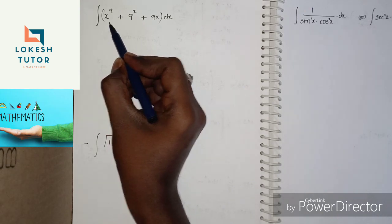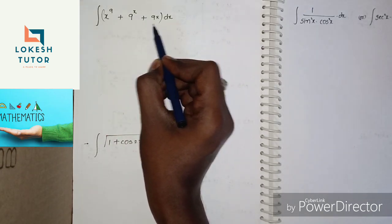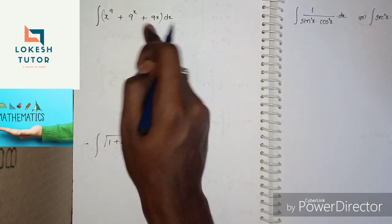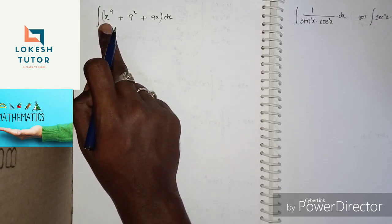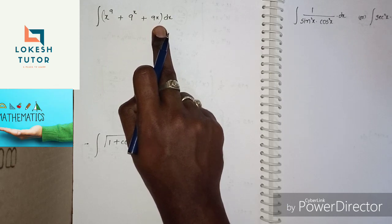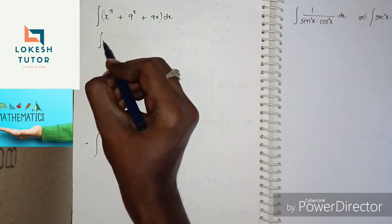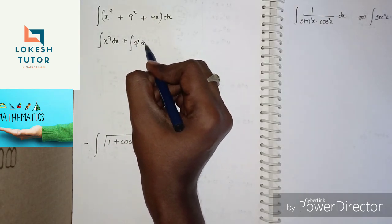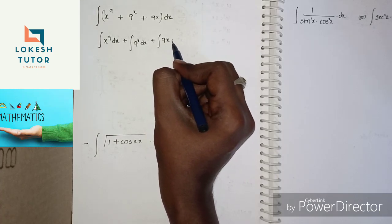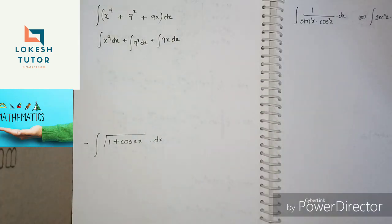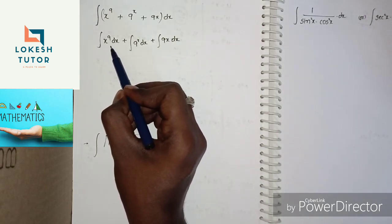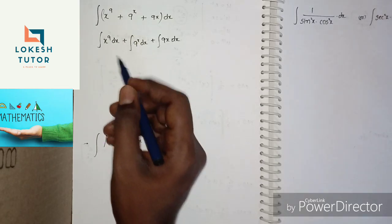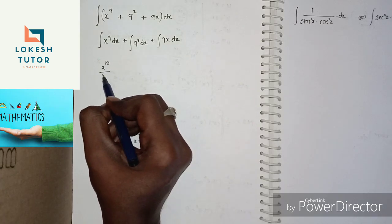First problem: Integral of x⁹ + 9ˣ + 9x. The first step is to split the integral using the plus symbol — separate each term into its own integral. So we get: integral x⁹ dx + integral 9ˣ dx + integral 9x dx. Using the formula for xⁿ dx = x^(n+1)/(n+1), the first term gives x¹⁰/10.